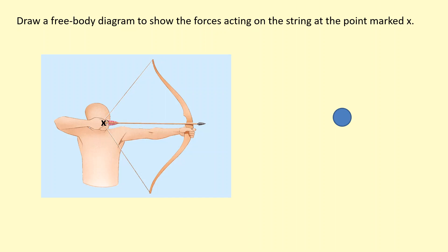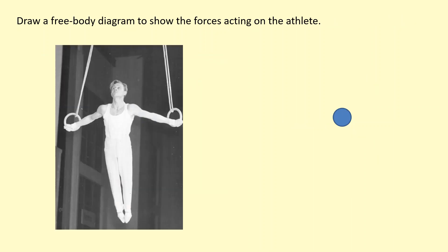Here we have an archer pulling back on a bowstring, and the forces are at point X. First there's going to be tension along the first string, and tension along the second string — I'll assume they're the same. Because the person is pulling it back, there's going to be a force in the backward direction. For the string to be at rest, all these forces must balance: the upward and downward components of the tensions must balance, and all the forces towards the left must balance all the forces towards the right.